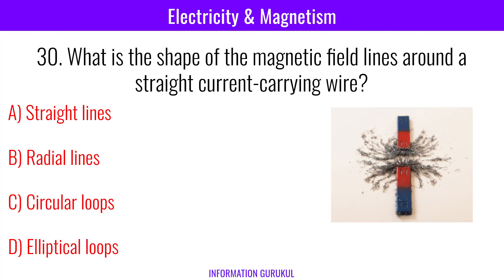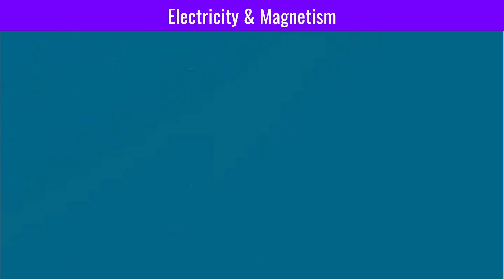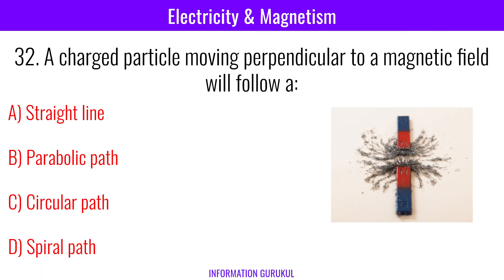What is the shape of the magnetic field lines around a straight current carrying wire? Circular loops. The magnetic field at the center of a circular current carrying loop is maximum. A charged particle moving perpendicular to a magnetic field will follow a circular path.